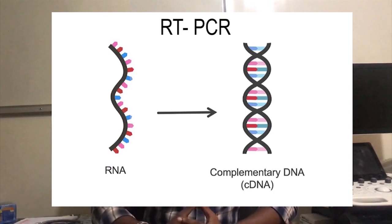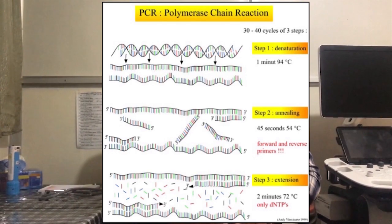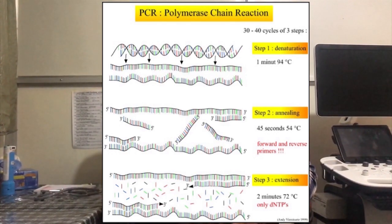We can use PCR machines. We can use thermal cycling in the PCR process. The steps involve denaturation, annealing, and extension. This clip shows the PCR process being run. The next step is the use of the PCR and the thermal cycler.